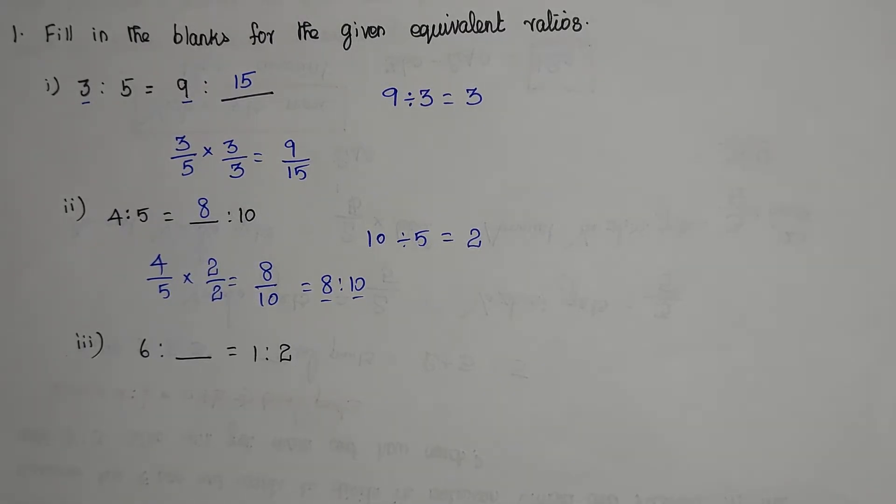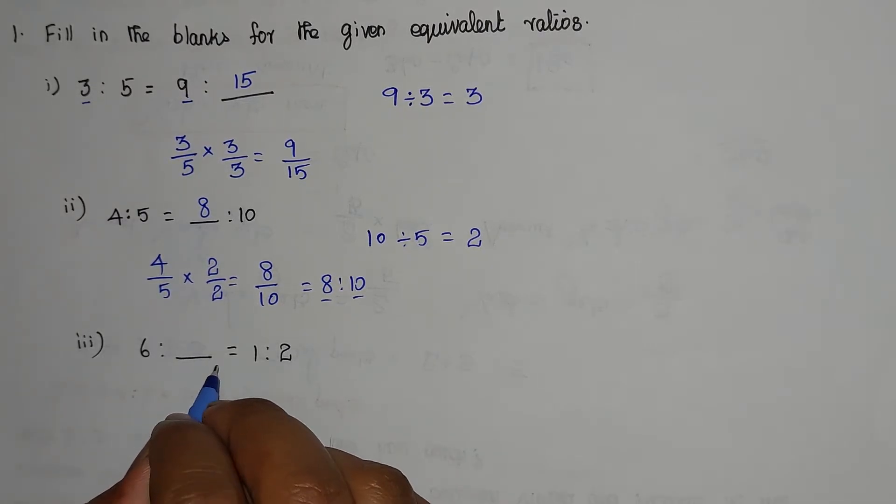Now we are going to solve problem number 3: 6 is to blank equal to 1 is to 2. So the denominator value is 1.